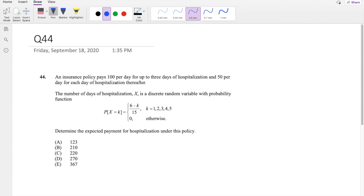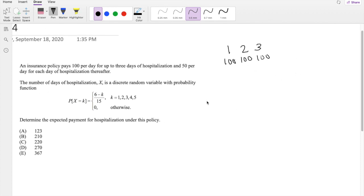An insurance policy pays $100 per day for up to three days. So day one, day two, and day three, they pay $100. For days after, they pay $50. So four and five, since this is a discrete function where X only goes up to five days, you know that these go for $50 and $50.